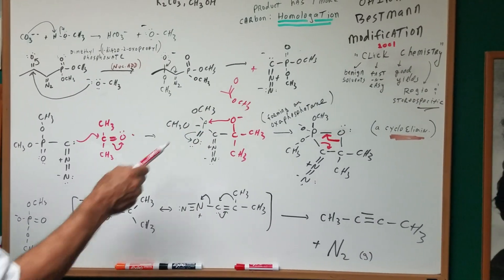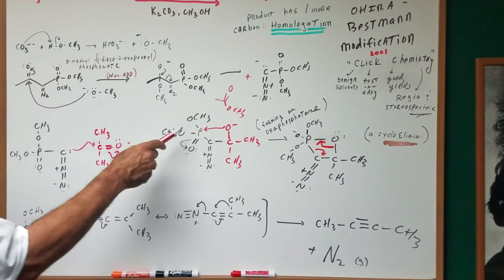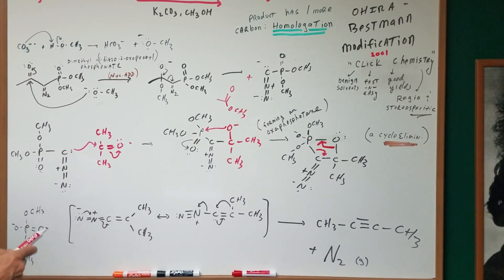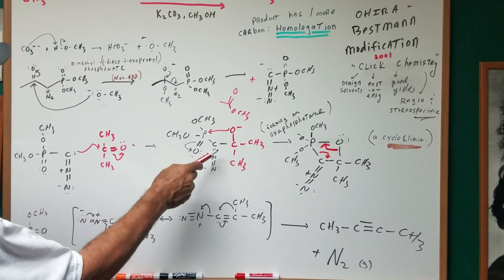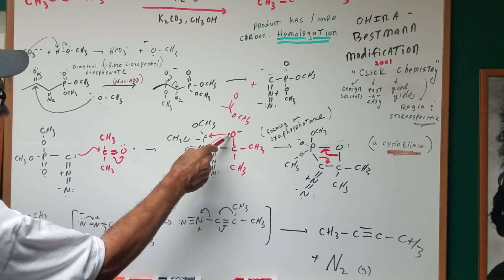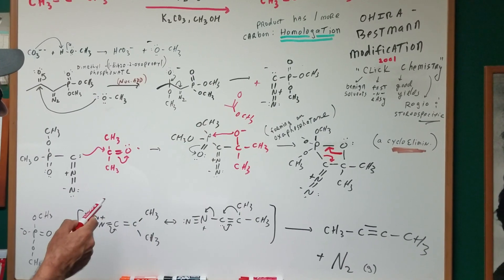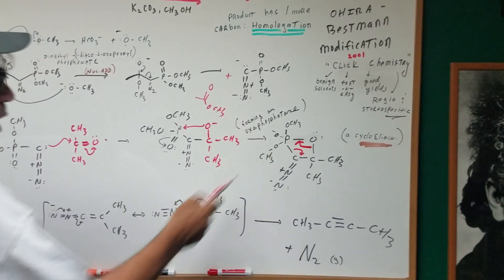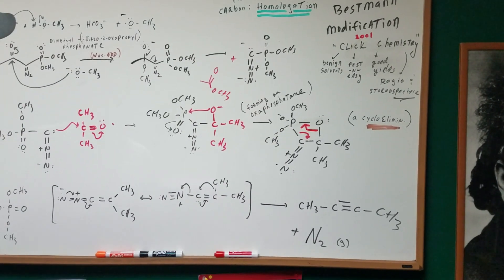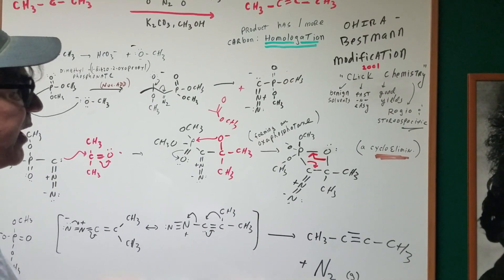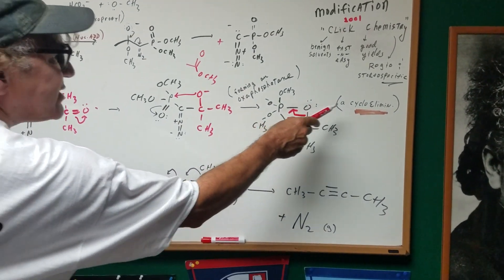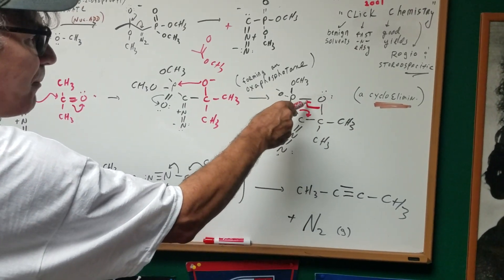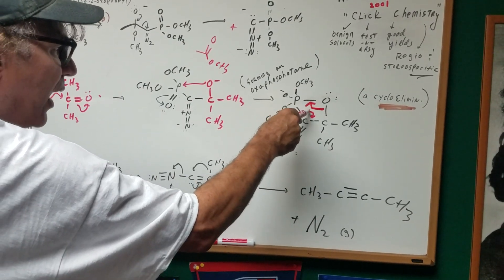Now I get an intermediate — you should recognize this. This is a beta-ene-like intermediate. We saw something like this in the Wittig reaction. Now we're going to attack the d-orbital of the phosphorus, and as you can see the bond moves open and we form an intermediate. Hopefully you all recognize something like this — this was an oxaphosphetane seen in the reaction called Wittig. Now we're going to do a cycloelimination.